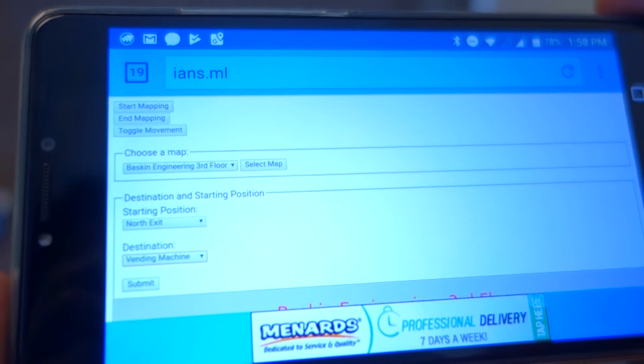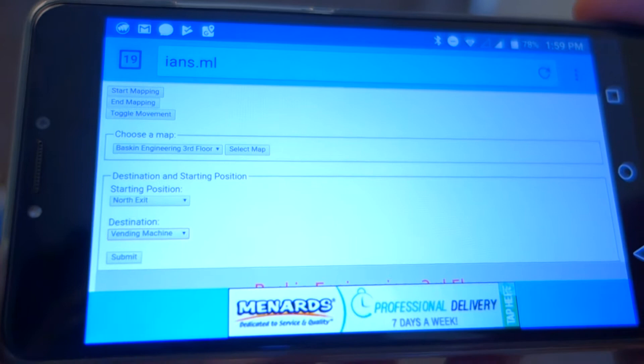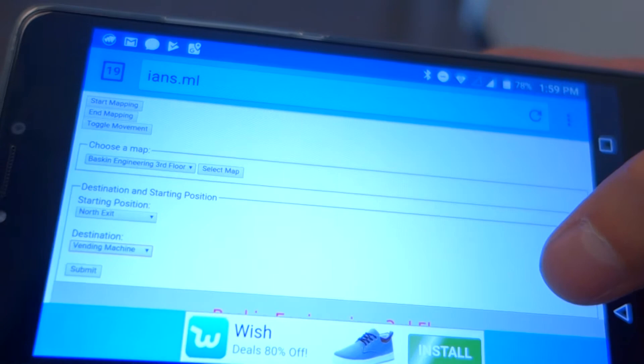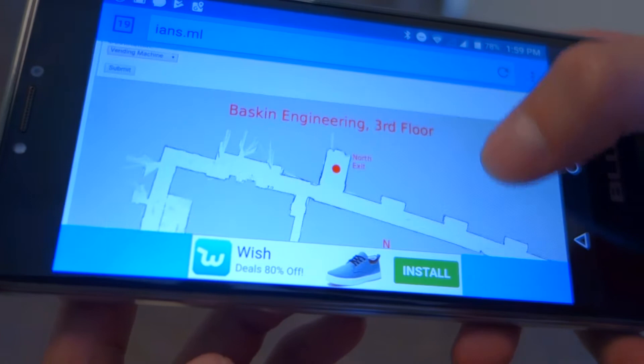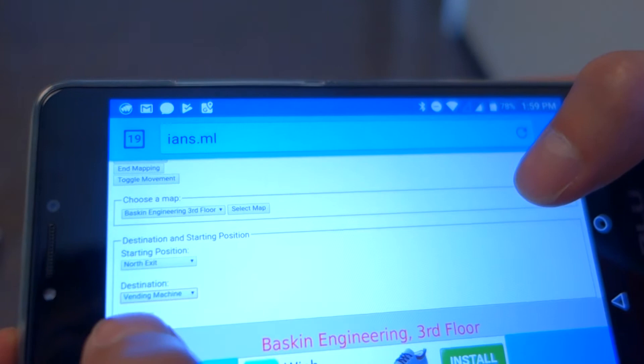Here is our web interface. You can access this through any device, computer, smartphone of any kind. The user is presented with a map which is a 2D occupancy grid. Currently we have our Baskin Engineering 3rd floor set up, and we will give it a starting position of north exit and the destination as a vending machine. When we hit submit, the robot should start navigating.